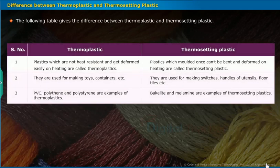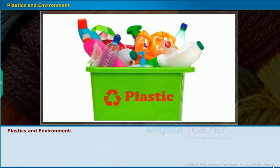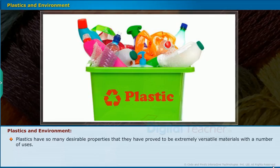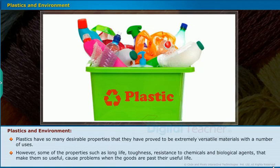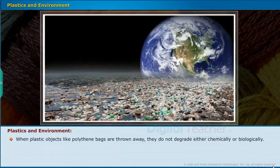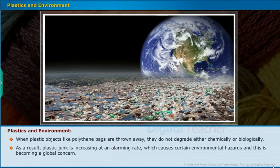Plastics and Environment: Plastics have many desirable properties and have proved to be extremely versatile materials. However, properties such as long life, toughness and resistance to chemicals and biological agents cause problems when the goods are past their useful life. When plastic objects like polythene bags are thrown away, they do not degrade either chemically or biologically. As a result, plastic junk is increasing at an alarming rate, causing certain environmental hazards and becoming a global concern.